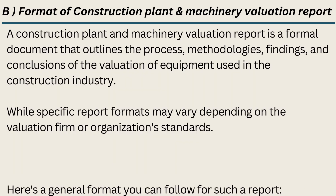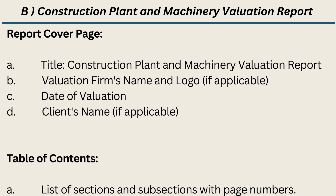Format of Construction Plant and Machinery Valuation Report: A construction plant and machinery valuation report is a formal document that outlines the process, methodologies, findings, and conclusions of the valuation of equipment used in the construction industry. While specific report formats may vary depending on the valuation firm or organization's standards, here is a general format. The Report Cover Page includes: Title — Construction Plant and Machinery Valuation Report; valuation firm's name and logo if applicable; date of valuation; and client's name if applicable. The Table of Contents lists all sections and subsections with page numbers.